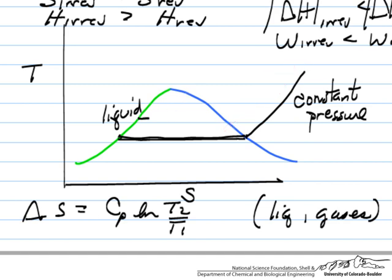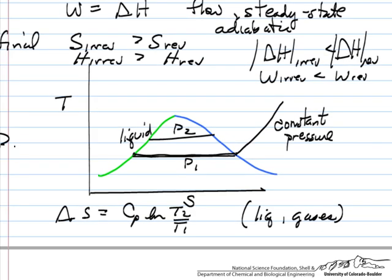Higher temperature corresponds to a higher pressure. So if this is P1, this is P2, P2 is greater than P1. And again, we expect some behavior like so. So this shows the behavior for a couple processes on TS diagrams.